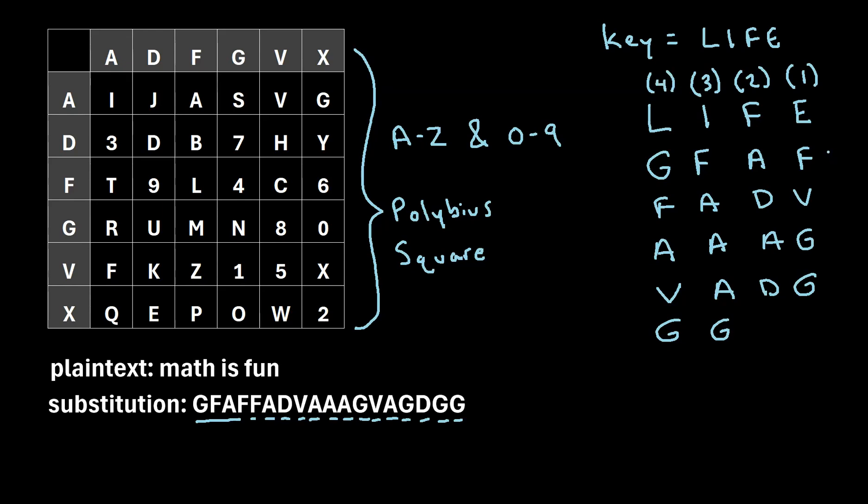Now the final step to writing our ciphertext is we're going to write the results in column form based on this order of 1, 2, 3, 4. So for example, this column will be written first. So we'll write F-V-G-G. So our ciphertext will start as F-V-G-G.